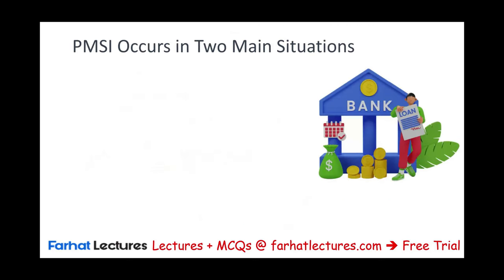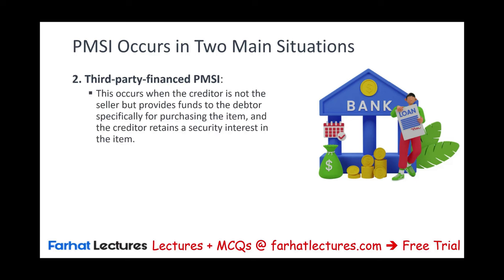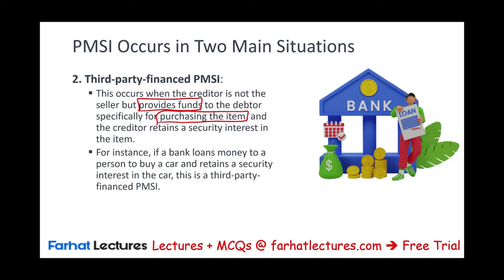The second situation is third-party financed PMSI, like a bank. This occurs when the creditor is not the seller but provides funds specifically for purchasing the item — for a car, a refrigerator, a TV, a computer — and the creditor retains a security interest in that specific item. For example, if a bank loans money to a person to buy a car and retains a security interest in the car, this is a third-party financed PMSI. The item must be related to the money that was provided.